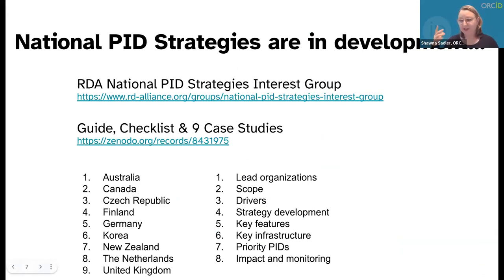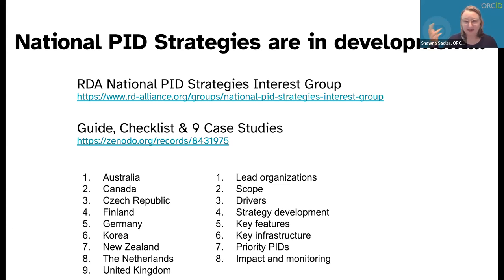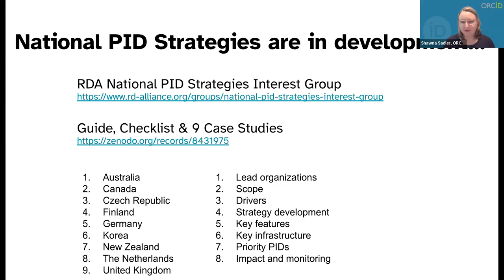We've also been notified to expect a new UNESCO Open Science Outlook report in the next week or two, with positive supportive language for persistent identifier adoption. As multinational organizations issue these positive PID policies, it filters down to the national level. We've noticed many countries starting to develop their own national PID policies — some call it an open science policy or roadmap. We formed a group inside of RDA to create a community of practice so these countries can coordinate and help each other.